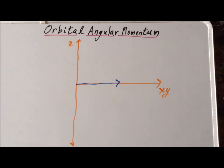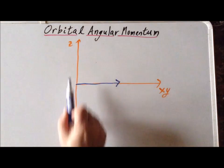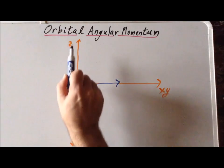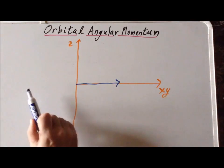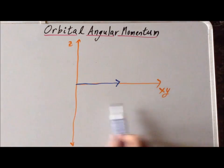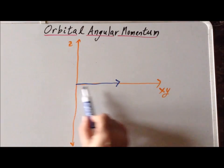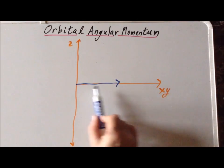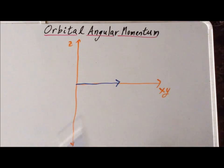We begin with a coordinate system that consists of the z-axis vertically, and horizontally, we have the xy plane. This isn't specifically just the x-axis — it's anywhere in the xy plane.